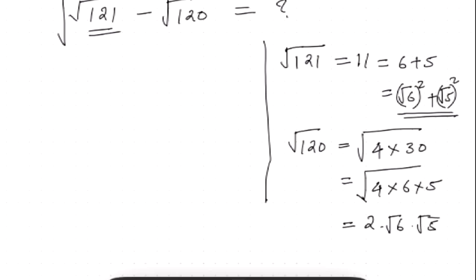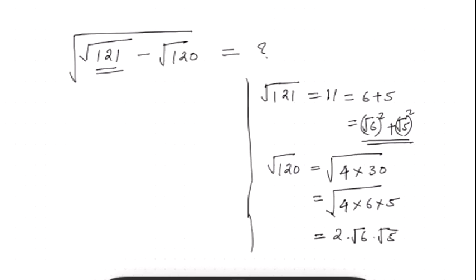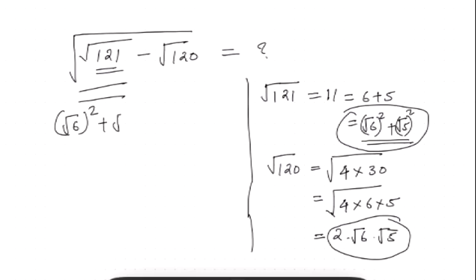In this color, let's see it. This formula is applied. Root 121 in this case is root 6 square plus root 5 square minus 2 root 6 into root 5, this is the whole root.